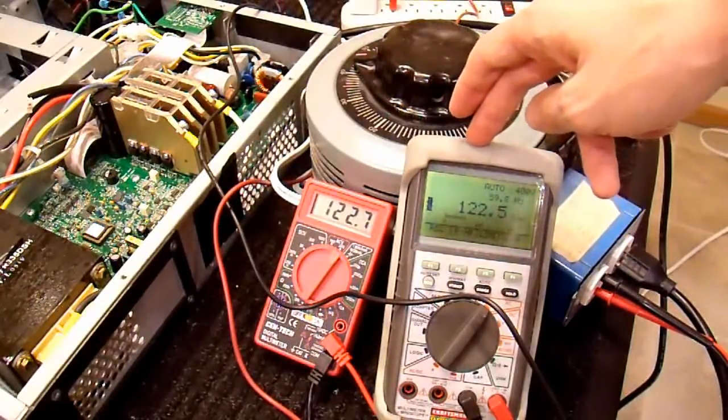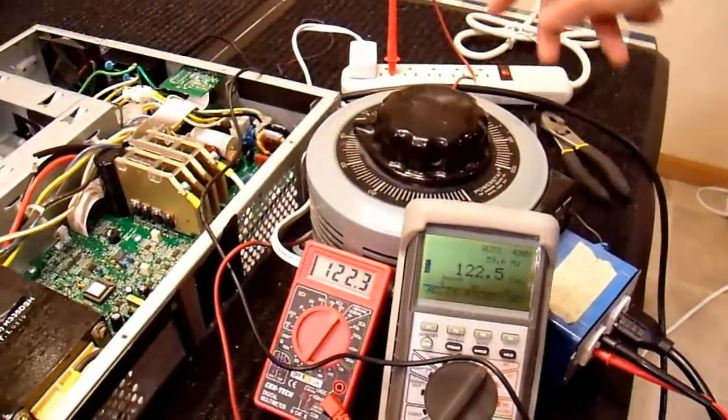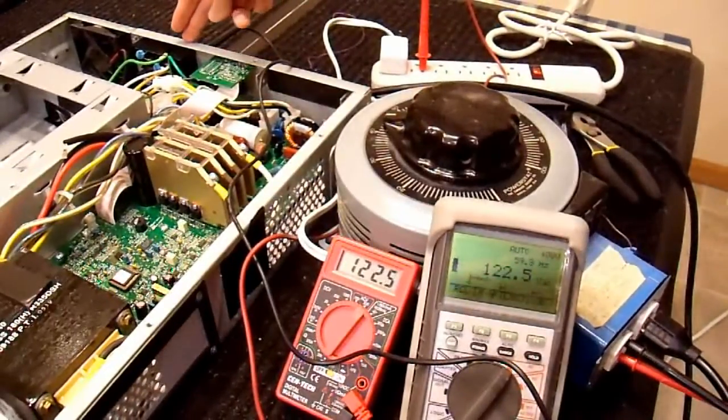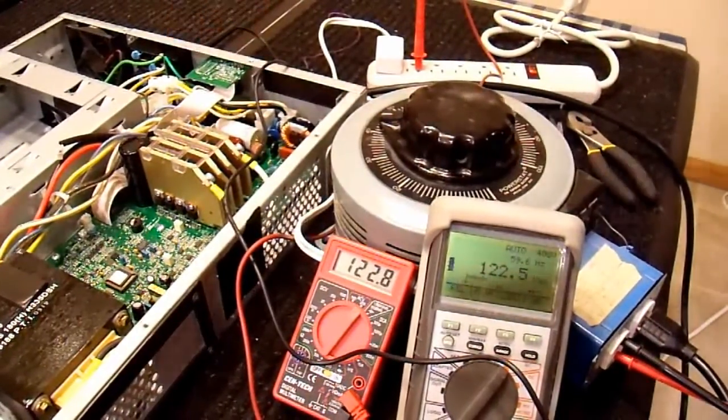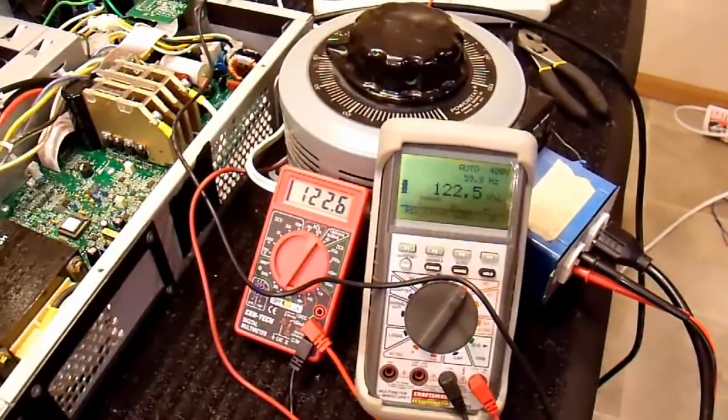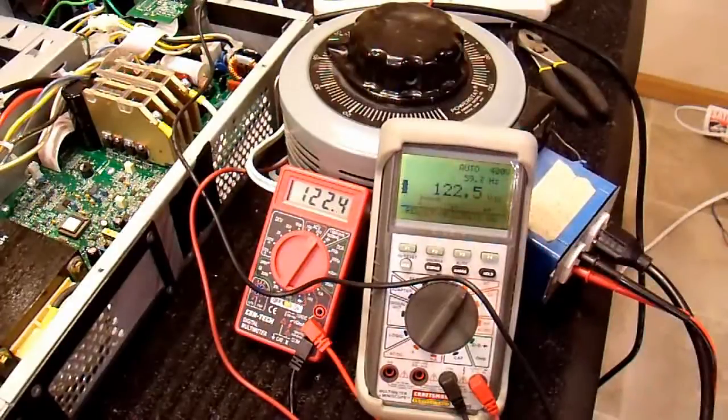This multimeter, on the other hand, is connected to one lead plugged into wall power over here, and the other lead is plugged into the output of the UPS. So basically what I'm doing with this multimeter is taking a look at the phase differential between my wall power and my UPS.